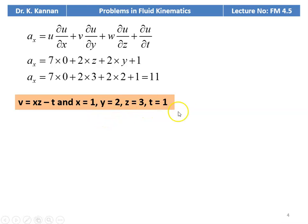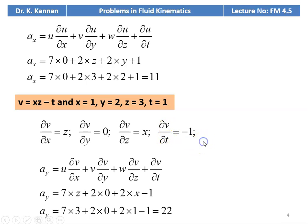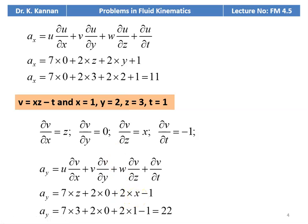Substituting all values, ax equal to 7 into 0 plus 2 into z plus 2 into y plus 1. Substituting numerical values: 7 into 0, 2 into z equal to 3, plus 2 into y equal to 2, plus 1, which equals 11. Similarly, velocity component v equal to xz minus t. At x equal to 1, y equal to 2, z equal to 3, and t equal to 1: dou v by dou x equal to z, dou v by dou y equal to 0, dou v by dou z equal to x, and dou v by dou t equal to minus 1. The acceleration component in the y direction: ay equal to 7 into 3 plus 2 into 0 plus 2 into 1 minus 1 equal to 22.